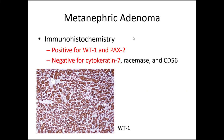The immunostains done in this case match the diagnosis. It is positive for WT1, which is a Wilms tumor antigen, and also positive for PAX2, which tells us that it's primary to the kidney. It's negative for cytokeratin 7 — that's very useful because papillary renal cell carcinoma, particularly type 1, is positive for cytokeratin 7. It's also negative for racemase, which is positive in papillary renal cell carcinoma. And it's negative for CD56, which is positive in Wilms tumor and should also be included in the differential diagnosis.